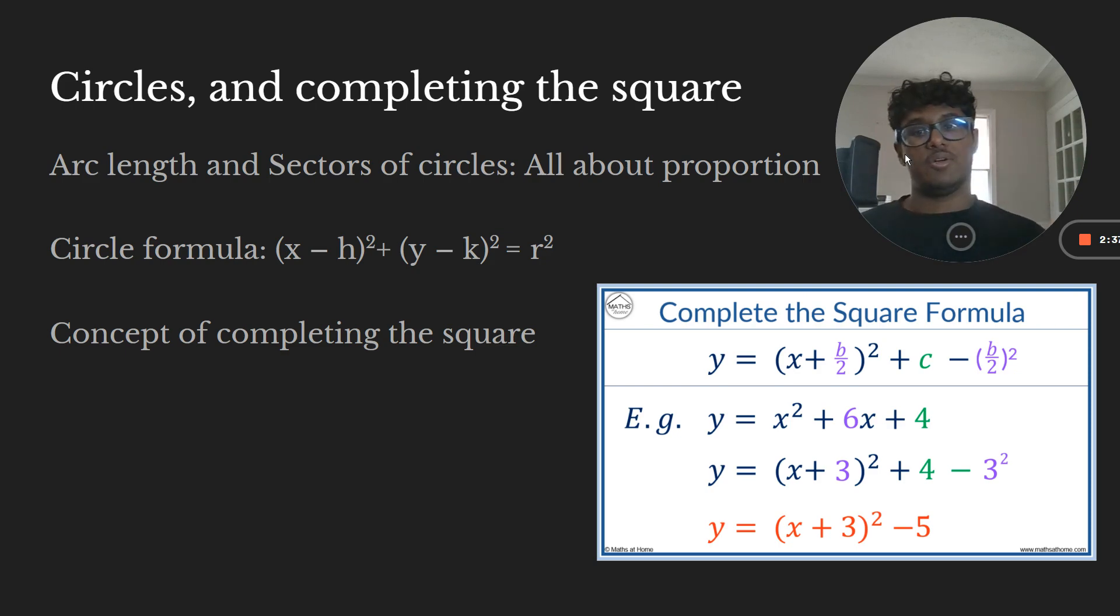Now circle formula, just read that formula, literally read that formula. H is going to be, so for the center, H and K, H is the X and K is the Y. Those are going to be your coordinates for the center of the circle. And R is going to be a radius. And it's always given as R squared. So it's literally as simple as that. So if it's X plus H, then your X coordinate for your center is actually negative, right?